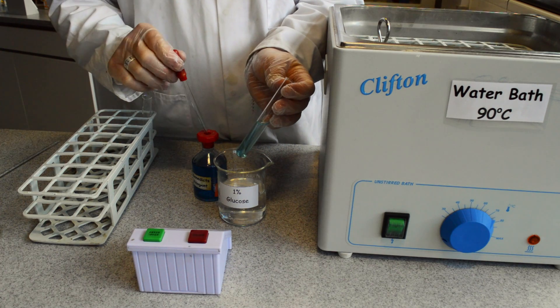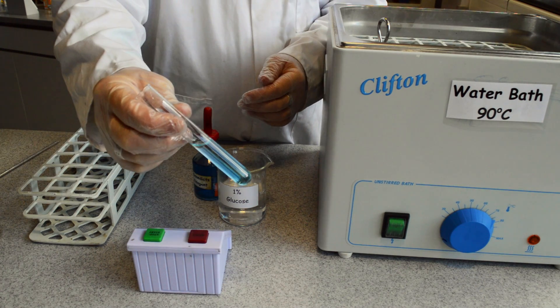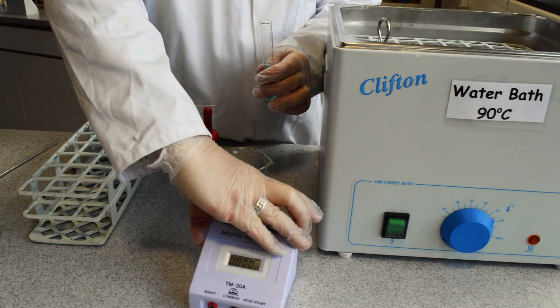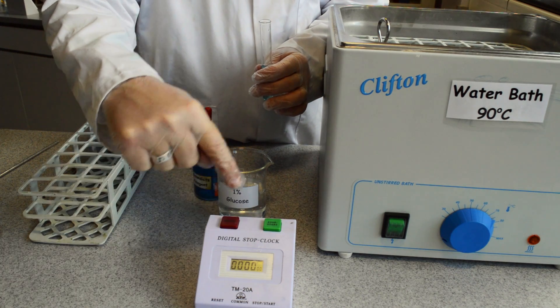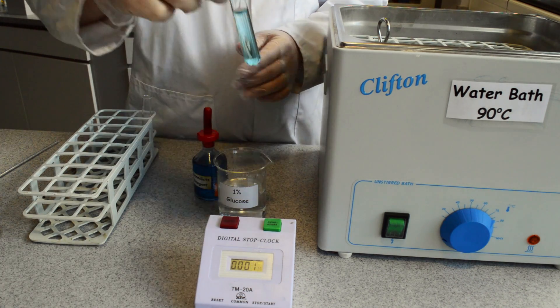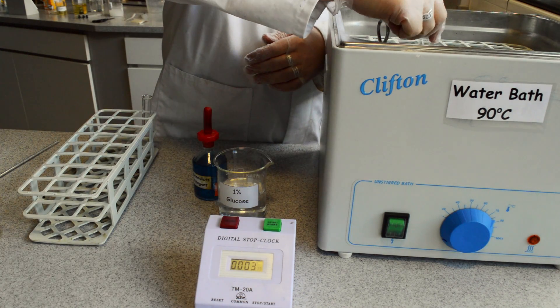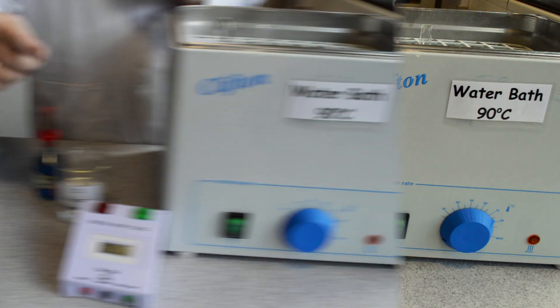This produces a light blue colour. Place the sample of the glucose with the Benedict's reagent into a water bath at 90 degrees centigrade for 5 minutes as you can see indicated.